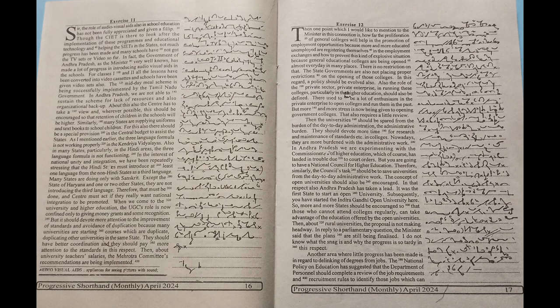When we come to university and higher education, the UGC's role is now confined only to giving money grants and some recognition. But it should devote more attention to improvement of standards and avoidance of duplication, because many universities are starting courses which are duplicating other universities in the same state. They should have better coordination and pay more attention to standards in this respect.